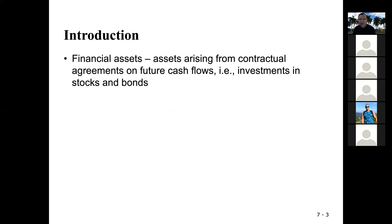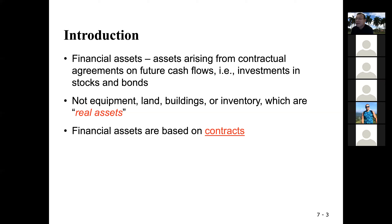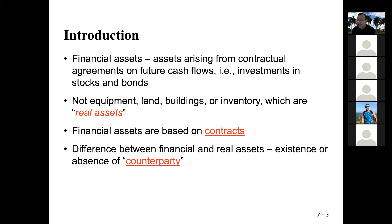What are financial assets? Financial assets arise from contractual agreements on future cash flows, such as stocks and bonds. In comparison, real assets are things like equipment, land, buildings, property, and inventories — you can physically use them. Financial assets are different: they are based on contracts, and there is always a counterparty involved.